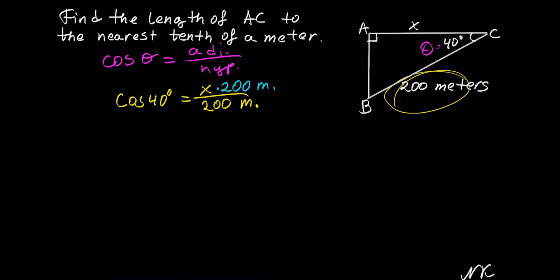let's do the same thing to the other side. We have cosine of 40 degrees, let's multiply it by 200, and let's put units at the end, meters.